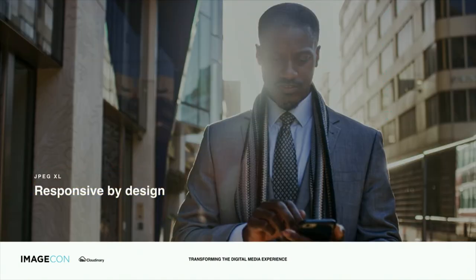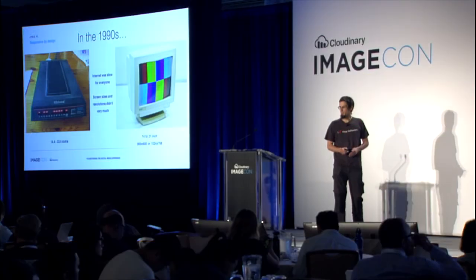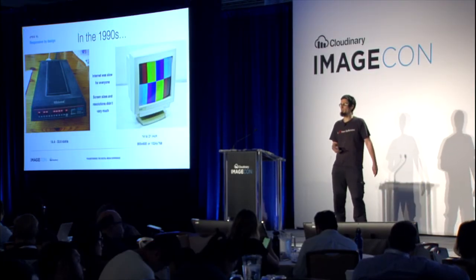Responsive by design — what does this mean? The internet has changed a lot in the time between the creation of JPEG and today. In the 90s, internet was slow for everybody, and screen resolutions and sizes varied, but not by much — you could basically assume everybody was using 800x600 or 1024x768, and a monitor was 14 to 21 inches. It was a pretty uniform experience.